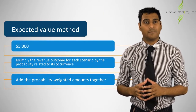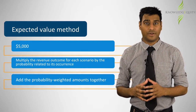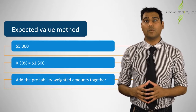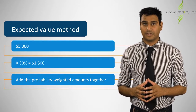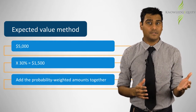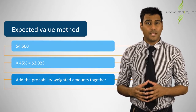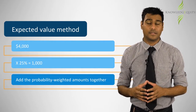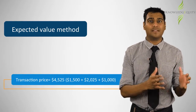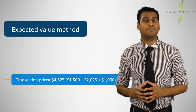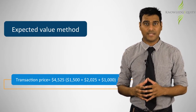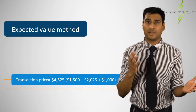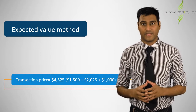Applying step two, the amount of $5,000 of revenue occurring is multiplied by the probability of 30%, giving us a probability-weighted amount of $1,500. That is $5,000 times 30%. The same calculation is applied to the scenarios where 10 jackets and 20 jackets are returned. Applying step three, we simply add the weighted probabilities together and get an expected value transaction price of $4,525 — that is $1,500 plus $2,025 plus $1,000.